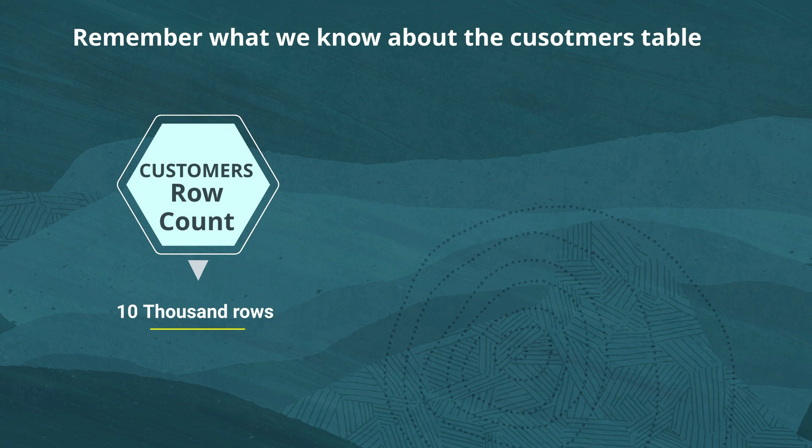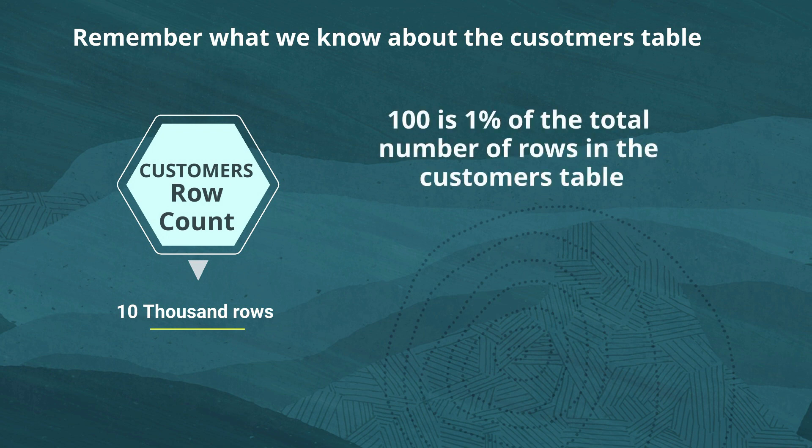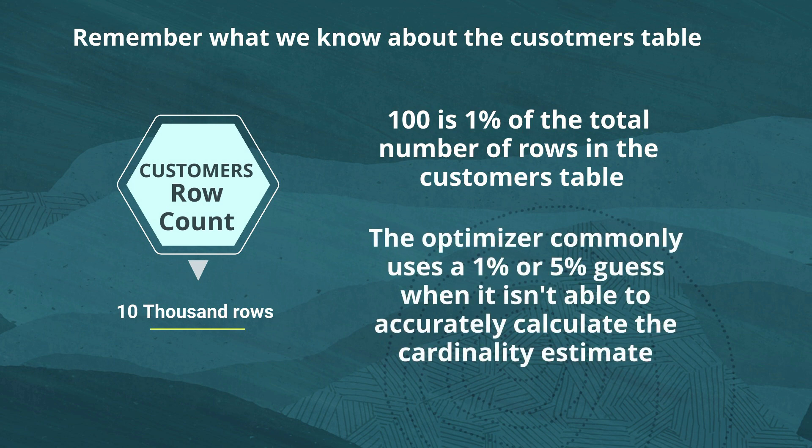The customer's table has a row count of 10,000 rows. 100 is 1% of the total number of rows in the customer table. And oftentimes you'll see the optimizer will commonly use a 1% or 5% guess when it isn't able to accurately calculate the cardinality estimate. And so be careful and watch out for that in the future.